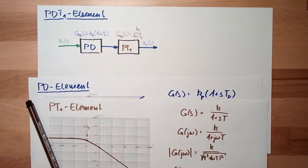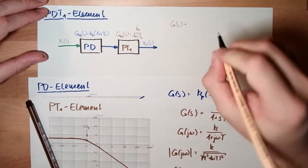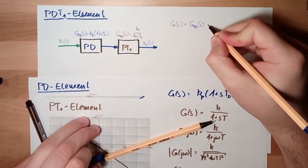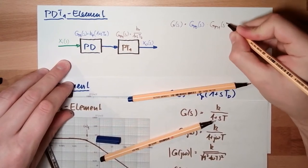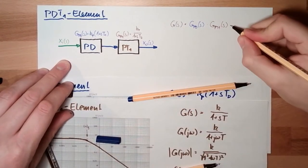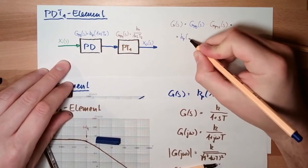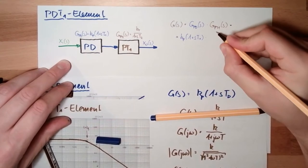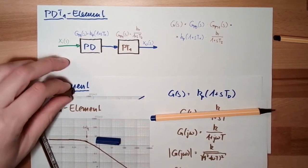What is the total transfer function? The total transfer function G(s) is, of course, G_PD(s) multiplied by G_PT1(s) because they are in series. So it looks like K_p·(1 plus S·T1) multiplied by K_T divided by (1 plus S·T2). These are the two parts.